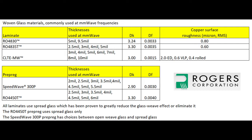The RO4835T is available in multiple thin thicknesses: 2.5 mil, 3 mil, 4 mil, and 5 mil — DK 3.3, DF 0.0035, copper surface roughness 0.6, considered quite smooth. All these numbers are tested at 10 gigahertz. The CLTE MW material is specially formulated specifically for millimeter wave, available in many thicknesses from 3 mil up to 10 mil, DK 3.0, DF 0.0015 — very low. Three different copper options are offered: standard ED copper at 2 microns RMS, very low profile at 0.6 microns RMS, and rolled copper — the smoothest — at about 0.4 microns RMS.